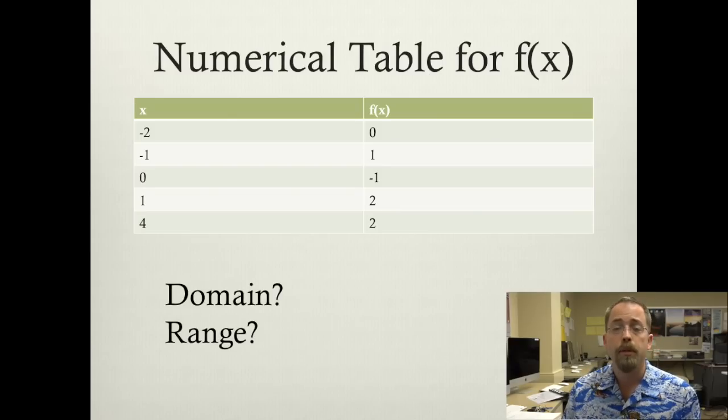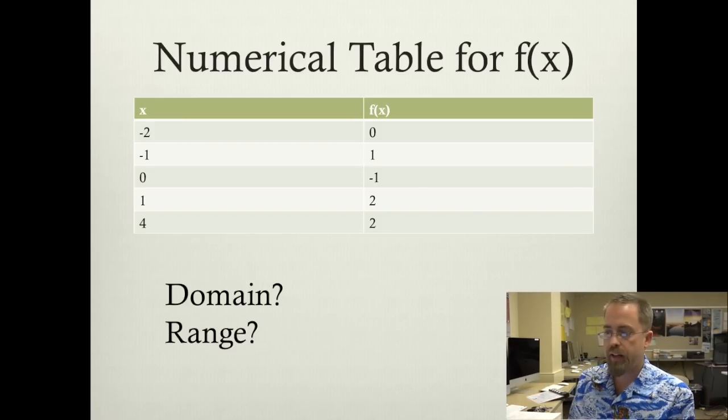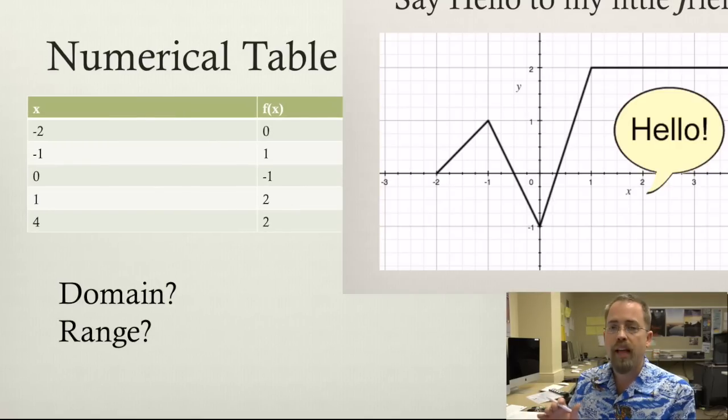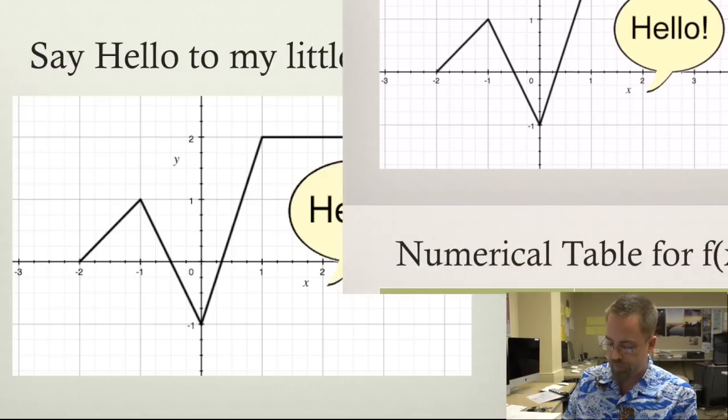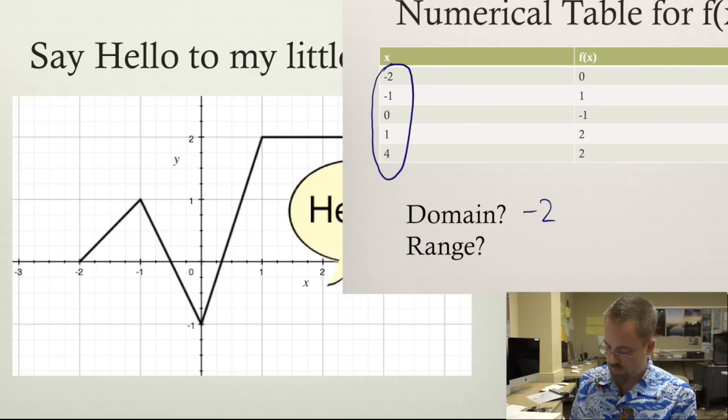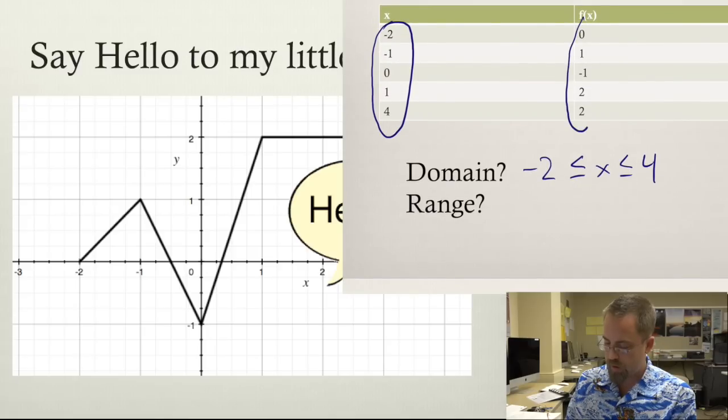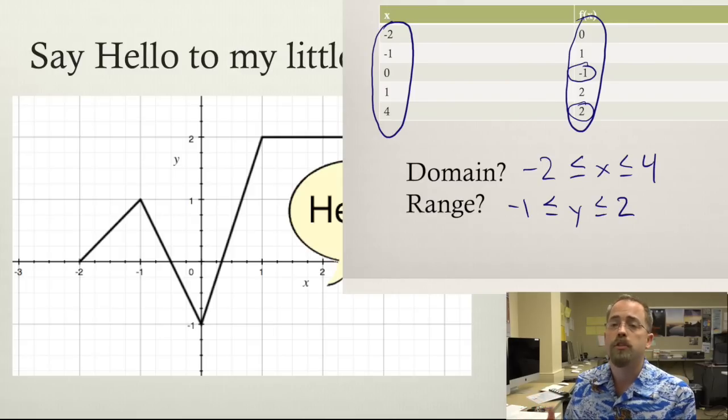Now, here's that same function again but just presented numerically. So I need to be able to cut back and forth between the picture here and the numerical data there. I want to be able to ask you, what is the domain and range of this function? You can see either way, whether you're looking at the graph or the table, the x's go from negative 2 to 4, from negative 2 inclusive to positive 4 inclusive. And the y's go from negative 1 down there to 2 up there. That one gets a lot harder to see on the table. Maybe that's a good candidate for the picture. But again, negative 1 inclusive to positive 2. So that's the domain and the range of the function as given.